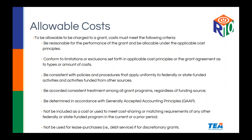For allowable costs, to be charged to a grant, a cost must: be reasonable for the performance of the grant and allocable under applicable cost principles; conform to limitations or exclusions set forth in those cost principles; be consistent with your policies and procedures — very important, because when auditing your own LEA you want uniformity and consistency, not variation from case to case; be accorded consistent treatment; be determined in accordance with GAAP, generally accepted accounting principles; not be included as a cost used to meet cost sharing or matching requirements; and not be used for lease purchases.